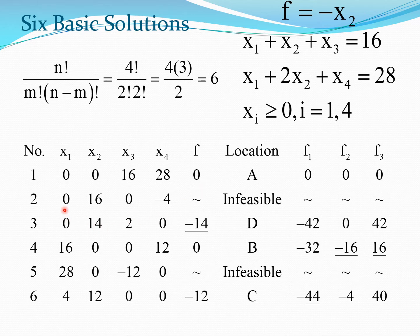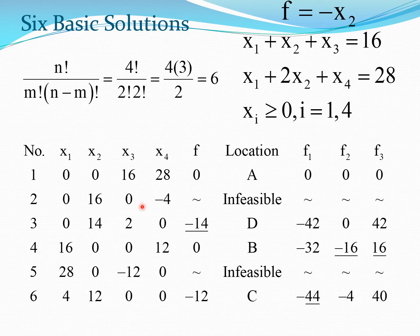Next, setting X1 and X3 equal to 0 gives X2 equals 16 from the first equation. Substituting X2 equals 16 into the second equation gives 32, so X4 equals minus 4. Since a negative value is obtained, this is an infeasible point and is discarded with no corresponding function value.